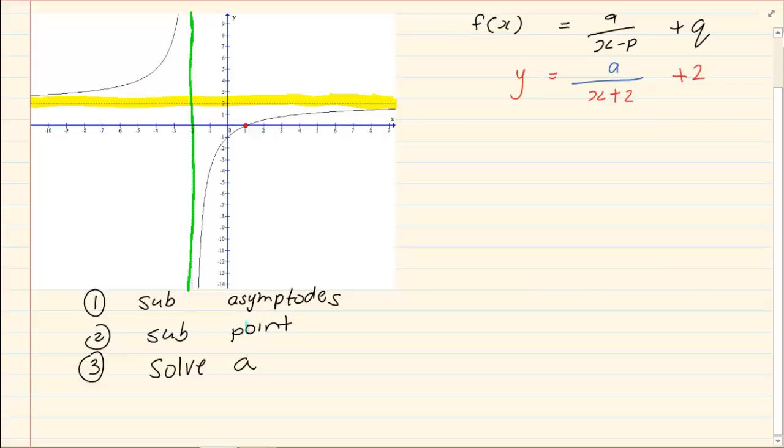Substitute your point. That's the next step. Now the point they've given us here is 1 and 0. So y is 0, a over 1 plus 2 plus 2.